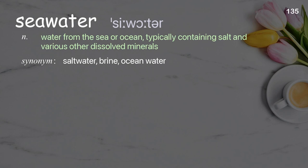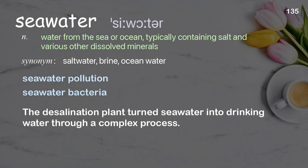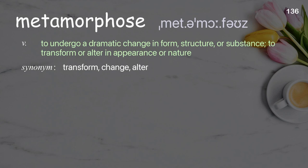Seawater: water from the sea or ocean, typically containing salt and various other dissolved minerals. Examples: seawater pollution, seawater bacteria. The desalination plant turns seawater into drinking water through a complex process.